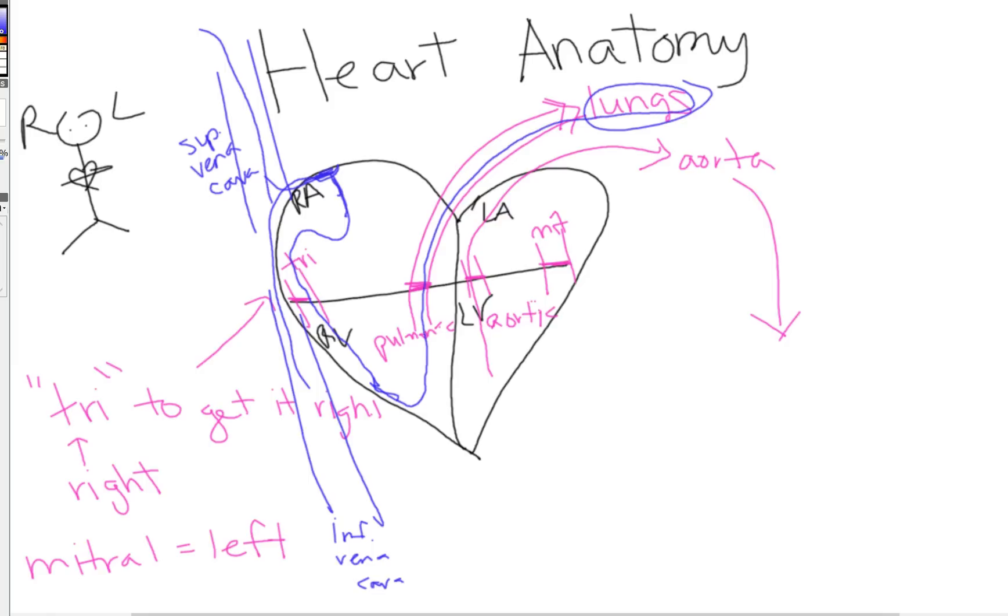So your oxygenated blood comes from your lungs back into the left side of your heart. Again, there's no valve here, it's just an opening. Then it goes through your AV valve on the left side of your heart, which is your mitral valve, and then it gets ejected from your left ventricle out your aortic valve to your aorta and out to your body.